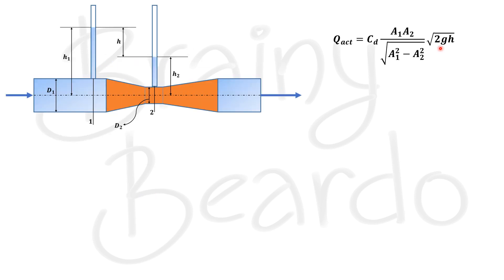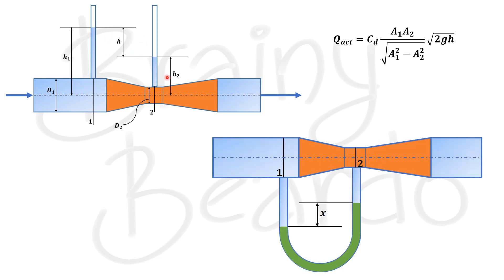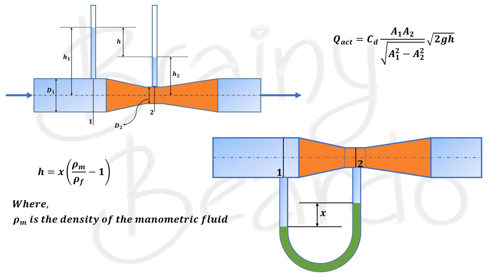The term h in the discharge equation is obtained from piezometers, but fixing piezometers is impractical when fluid pressure is very high, as the piezometer length would also need to be very large. In practice, piezometers are replaced by a U-tube differential manometer, where the difference in manometric fluid level gives the pressure difference between sections 1 and 2. If the manometer reading is x, we convert it to h using: h = x·(ρ_m/ρ_f − 1), where ρ_m is the density of the manometric fluid and ρ_f is the density of the fluid flowing in the pipe.